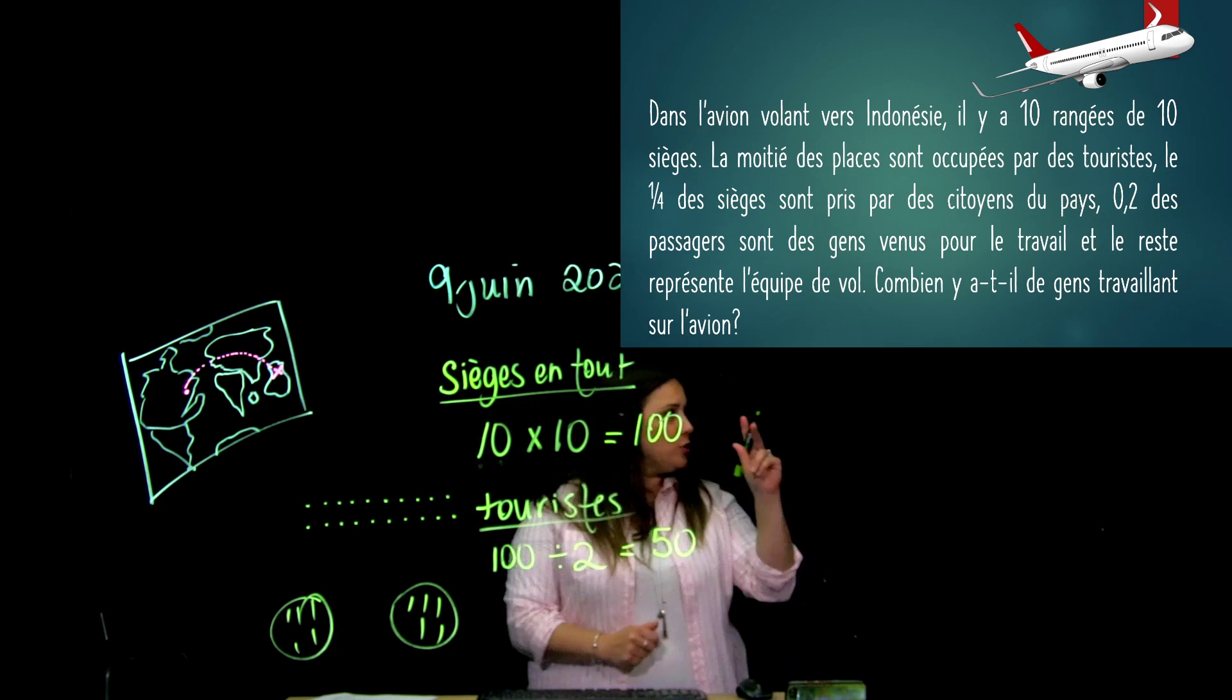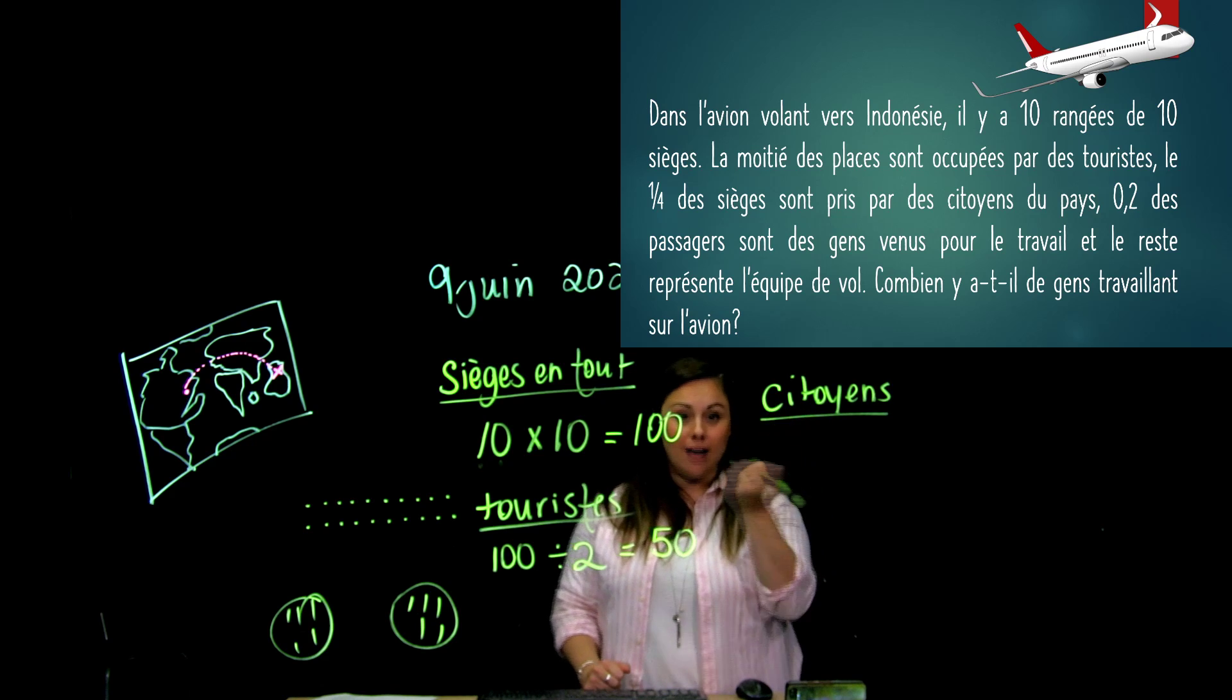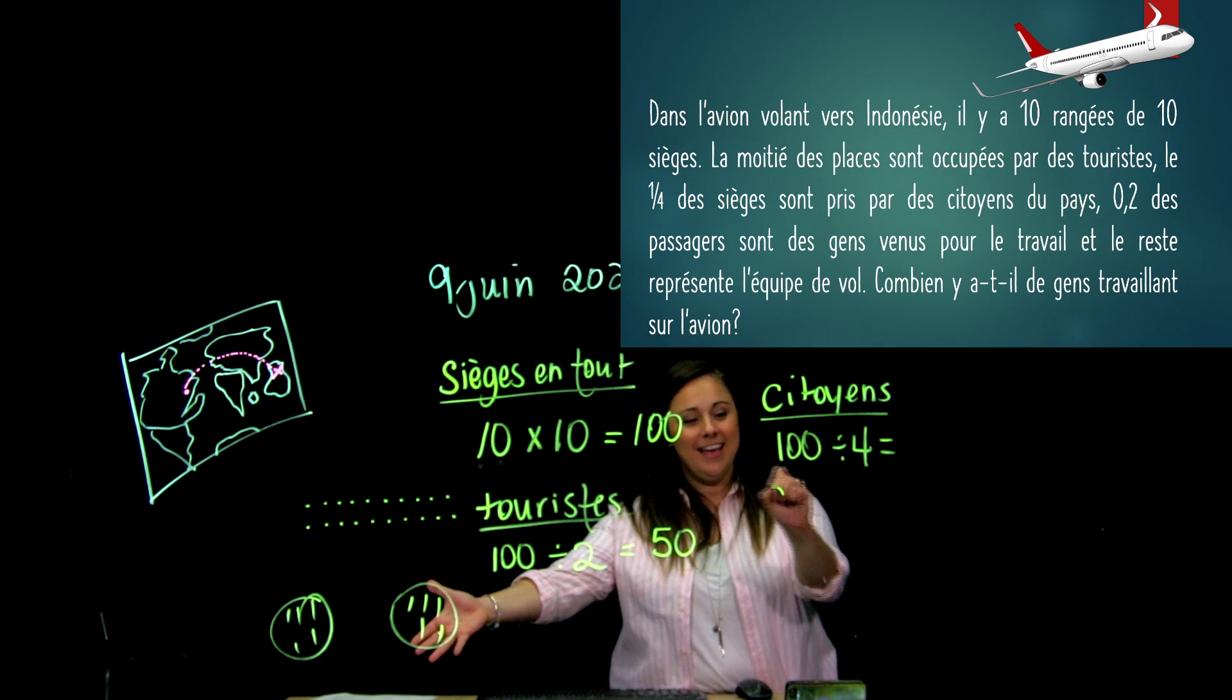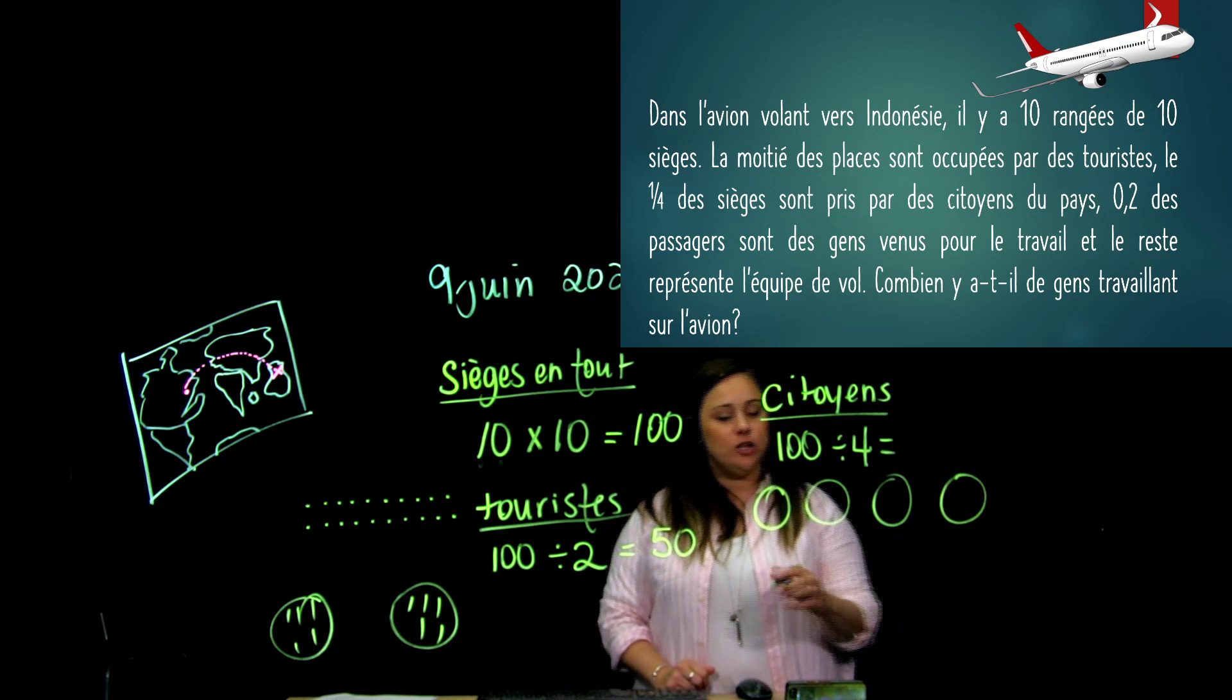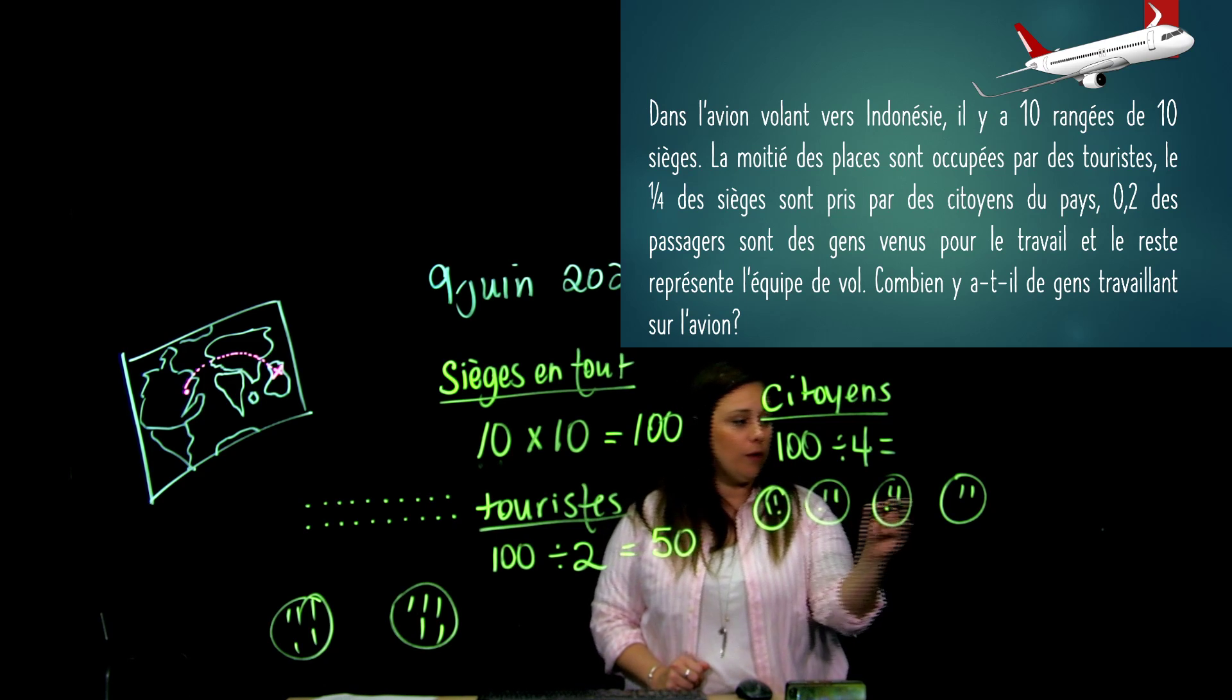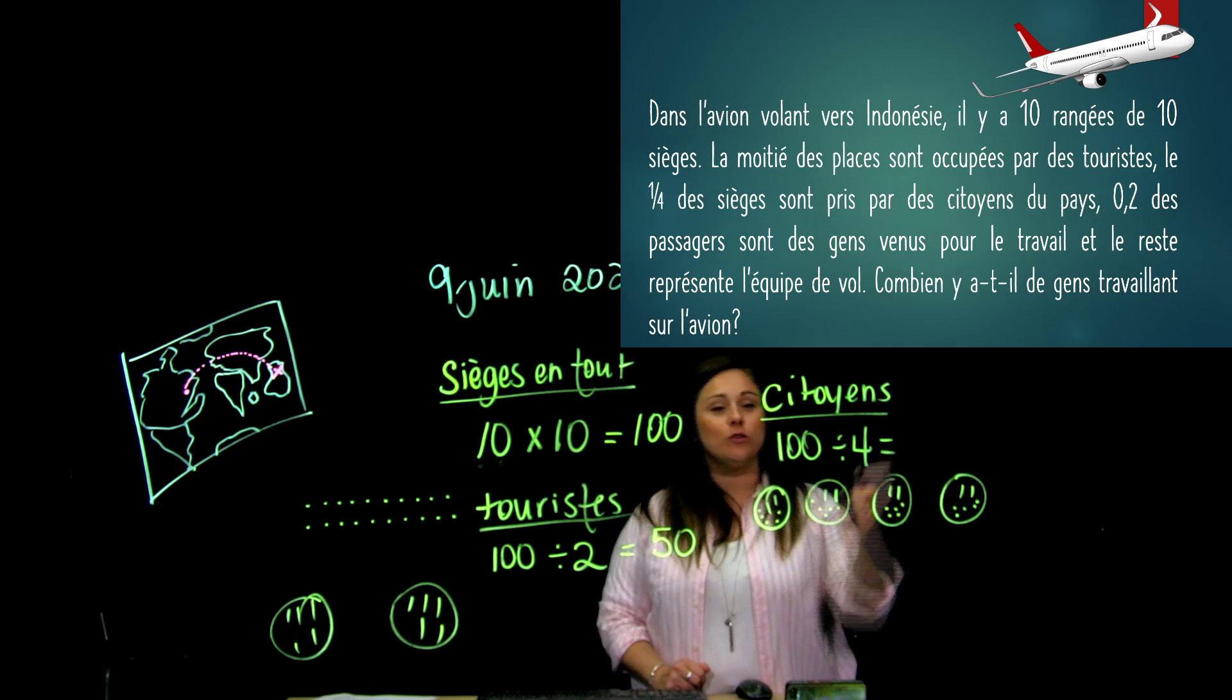Je m'en vais faire la dernière partie. J'ai le quart des sièges qui sont les citoyens. Alors, je m'en vais écrire citoyens. Et j'ai le quart. C'est divisé par 4. Le quart, c'est divisé par 4. Alors, j'ai 100 que je vais diviser par 4. Je peux aller mettre mes dizaines. Alors, 10, 20, 30, 40, 50, 60, 70, 80. Et là, il m'en reste 20 que je dois séparer. 1, 2, 3, 4, 5, 6, 7, 8, 9, 10, 11, 12, 13, 14, 15, 16, 17, 18, 19, 20. Alors, je trouve que c'est 25.